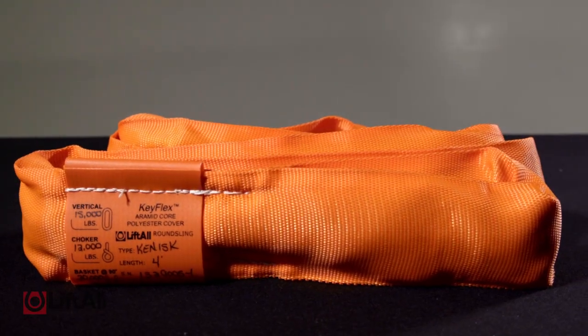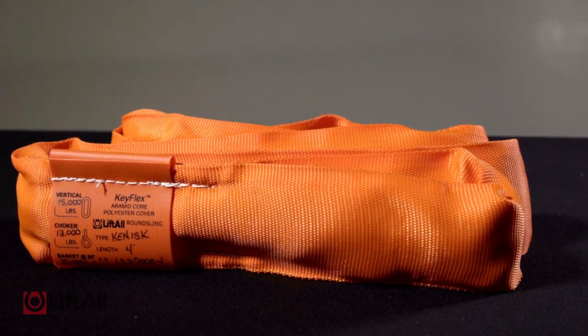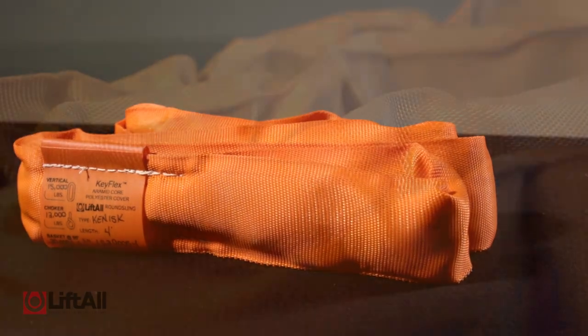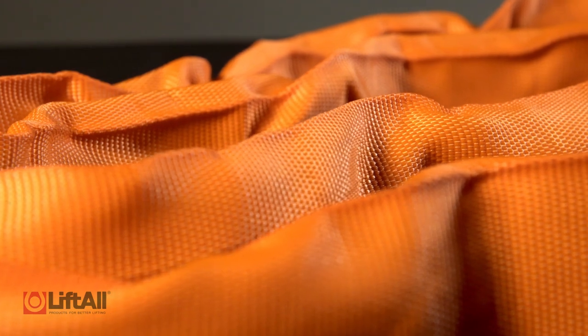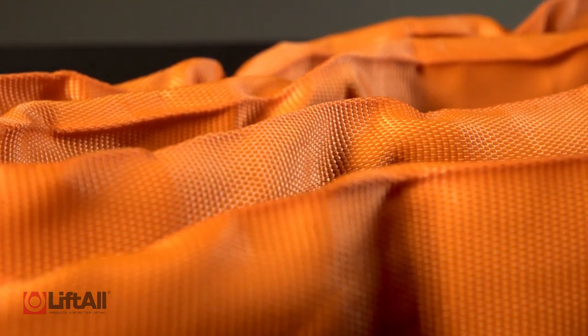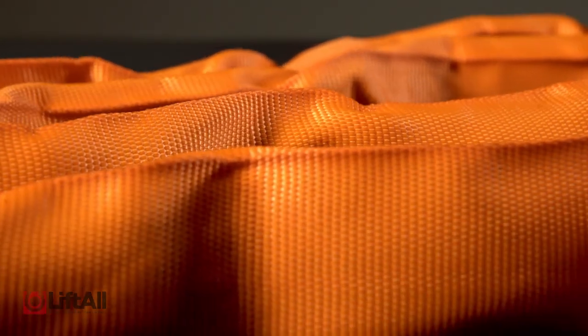Key Flex round slings on the other hand are the gold standard in the world of round slings. They feature a signature Key Flex orange jacket with Technora gold core yarns that result in a sling that's 53% lighter than standard Tough Flex and 75% increased heat resistance. And when it comes to addressing rigor ergonomic requirements, these slings hit top marks.